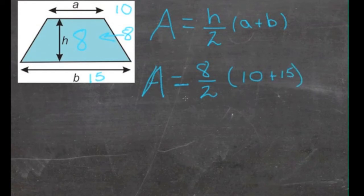Now we have to worry about our order of operations. We'll do the parenthesis first. 10 plus 15 is 25. Now we have A equals 8 over 2 times 25.